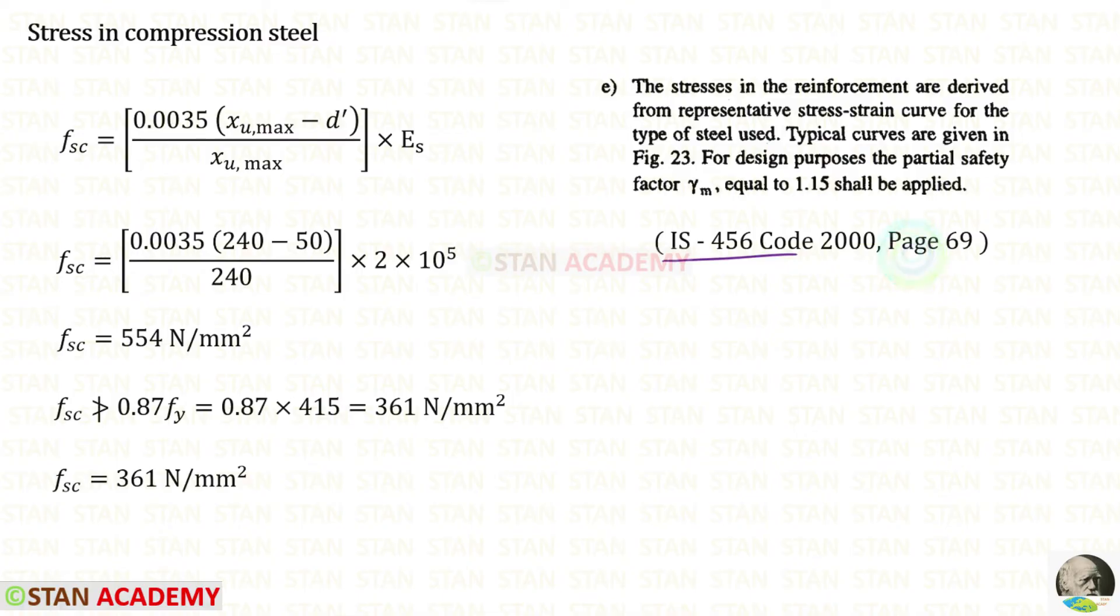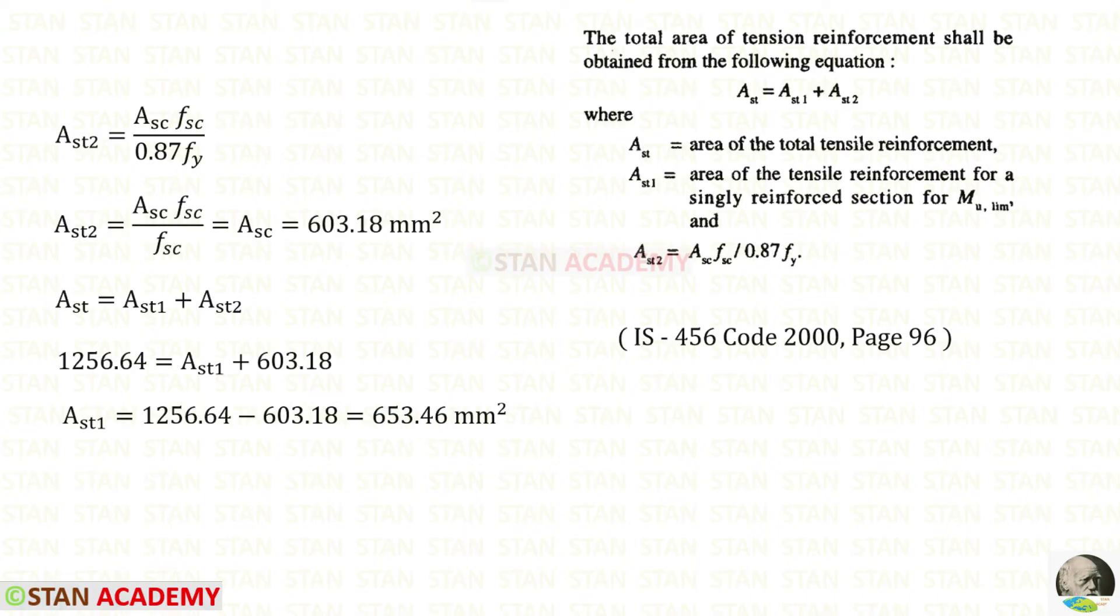In the code book page number 69, it is given that for design purposes the partial safety factor in the case of stresses in reinforcement should be 1.15. So it will be FY upon 1.15. We can approximately write this as 0.87 FY. FSC should not be more than 0.87 FY which is 361. In this case we have to take FSC as 361 Newton per millimeter square.